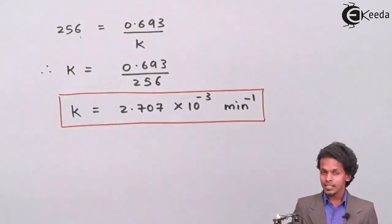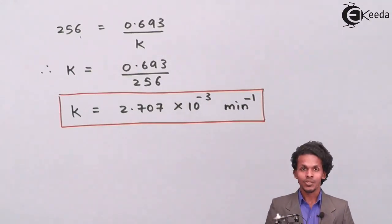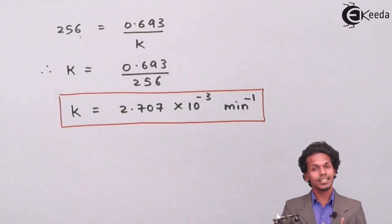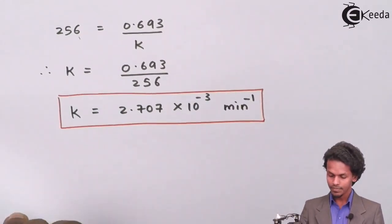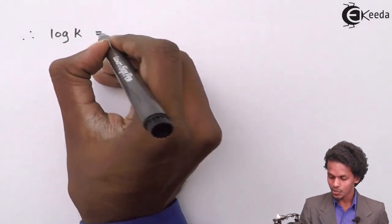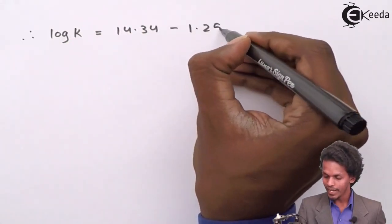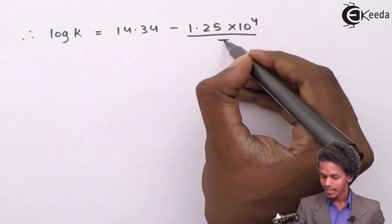All values are now calculated, and the remaining thing to find is the temperature. We will substitute every value into the given equation to find T. The equation is: log K = 14.34 minus 1.25 × 10⁴ divided by T.